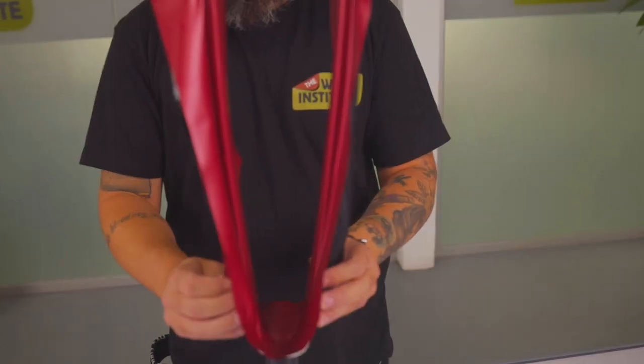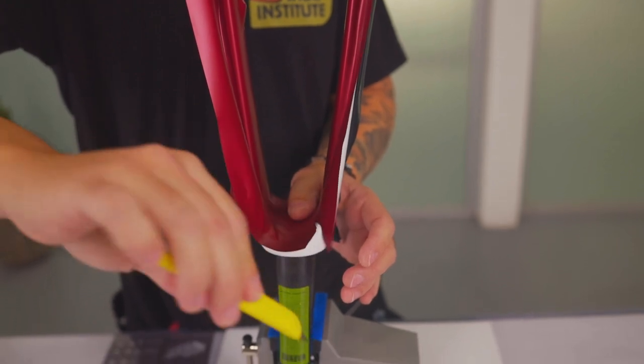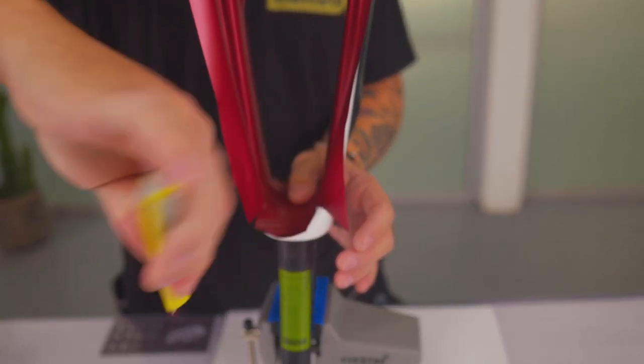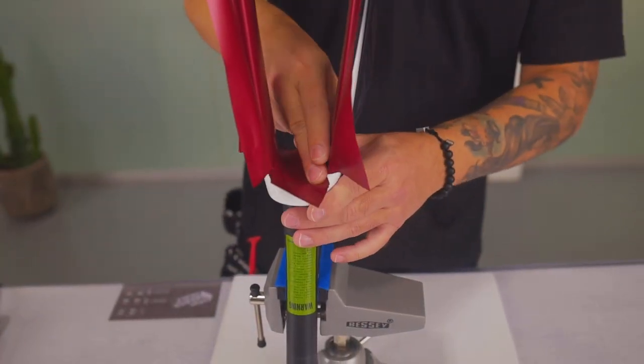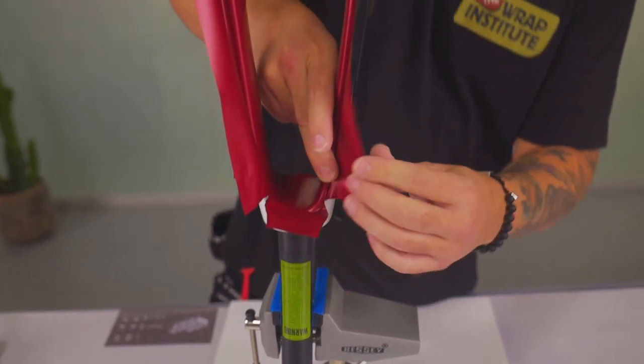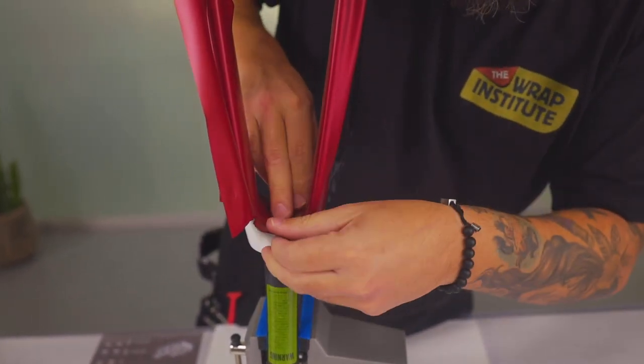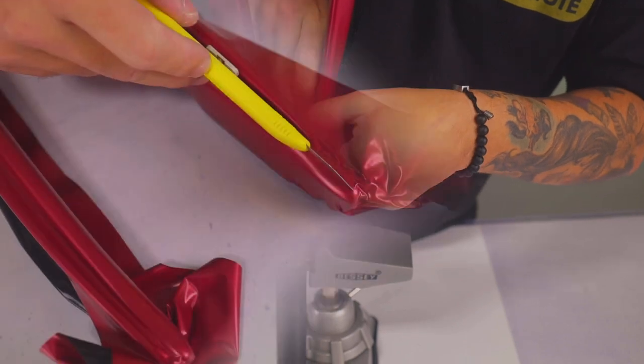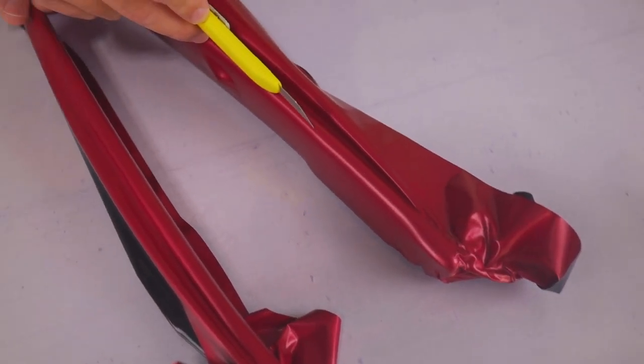Once one side is complete, rotate the fork and make the same type of relief cuts. This allows the film to relax without over-stretching on this critical section. Once the film is formed around the scoop at the bottom, form the film around the top.